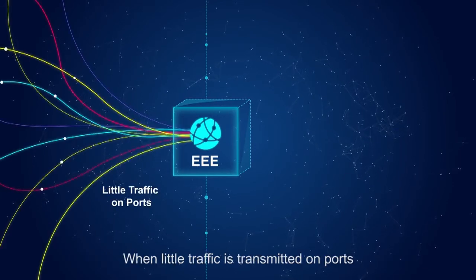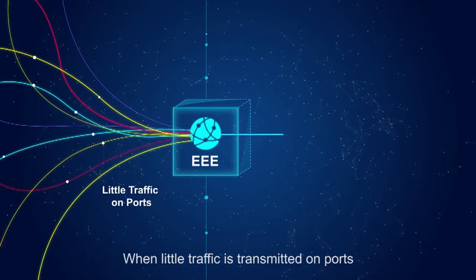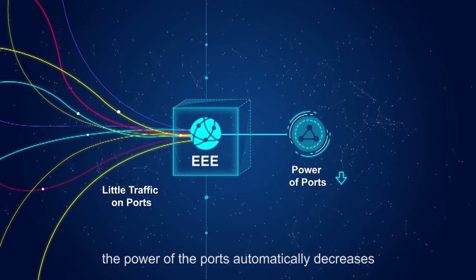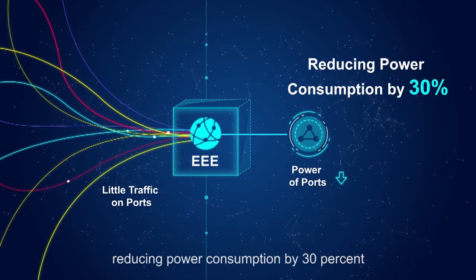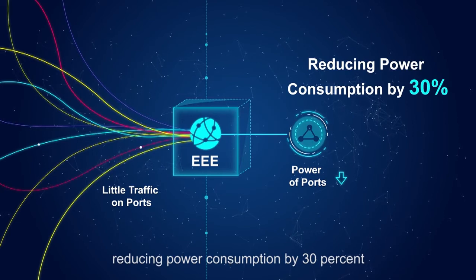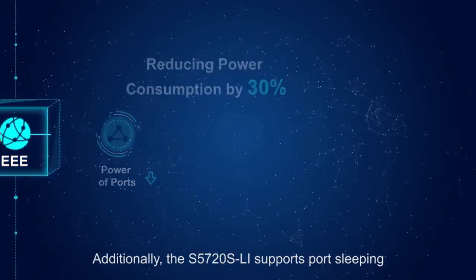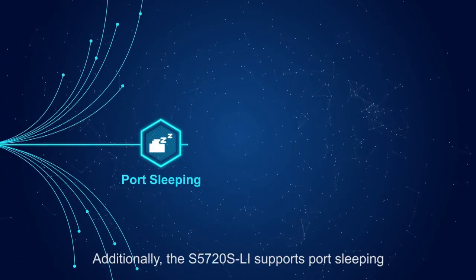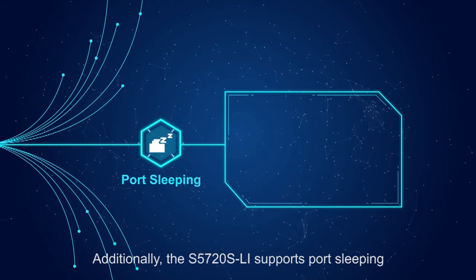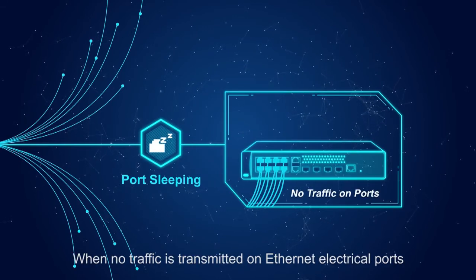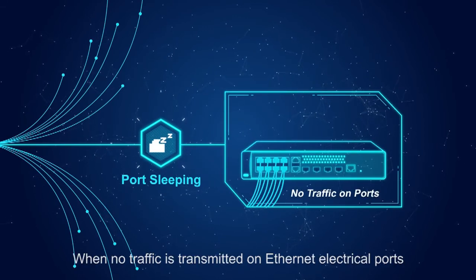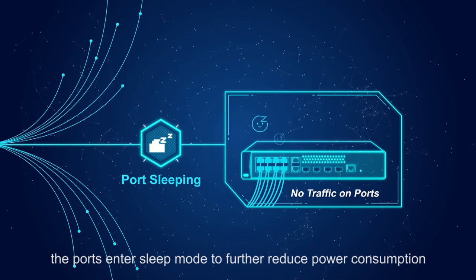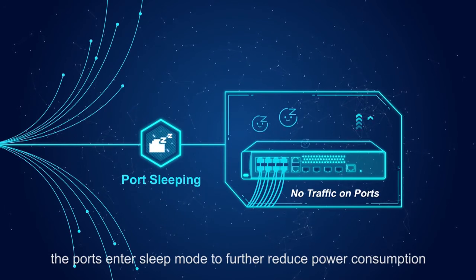The switches also support Energy Efficient Ethernet technology. When little traffic is transmitted on ports, the power of the ports automatically decreases, reducing power consumption by 30 percent. Additionally, the S5720S-LI supports port sleeping — when no traffic is transmitted on Ethernet electrical ports, the ports enter sleep mode to further reduce power consumption.